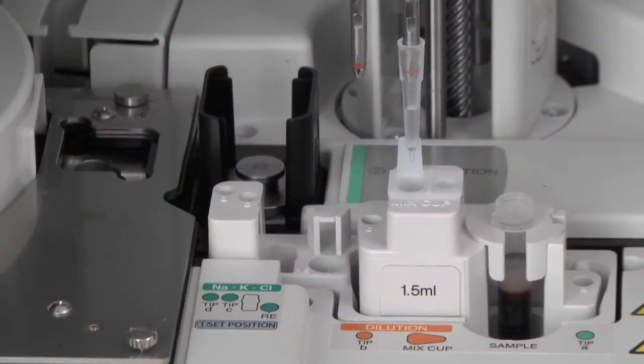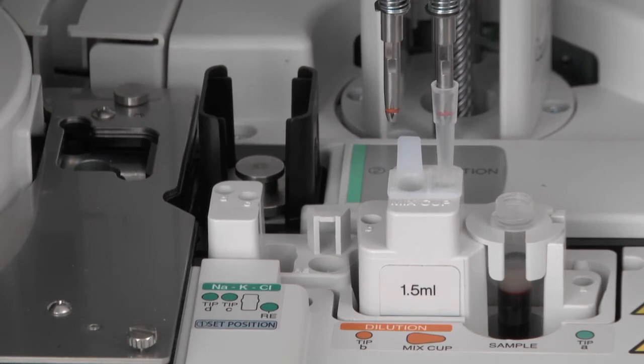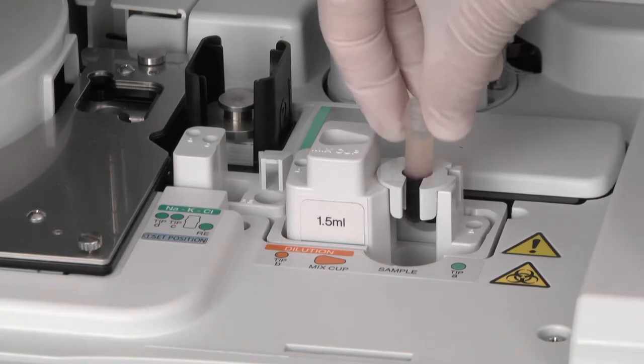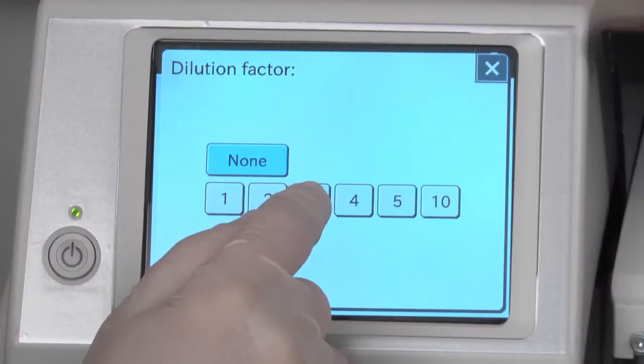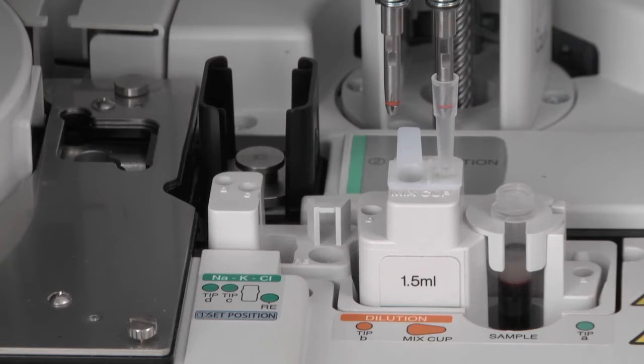For results that are outside of measurable limits, the Element DC offers automated sample dilution, which eliminates guesswork and time-consuming manual steps. Simply set your sample, choose your dilution factor, and the analyzer will automatically perform the dilution and calculate your results.